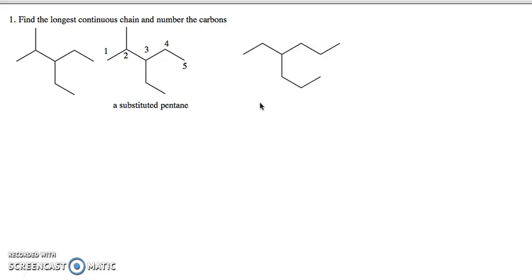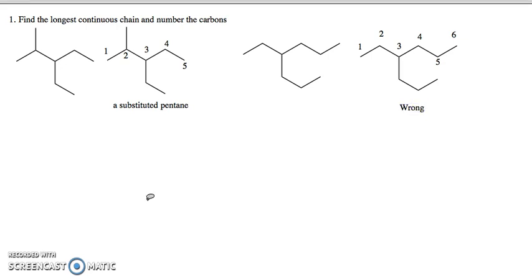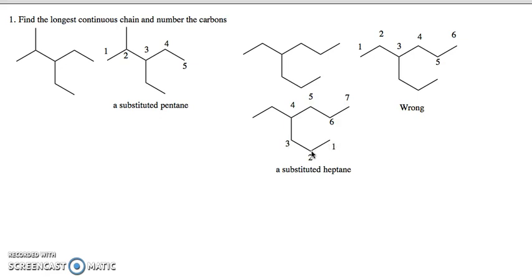Other times this determination is not as straightforward. In this compound it's tempting to start numbering here and say one, two, three, four, five, six is the longest chain — however, that would be wrong. There's another way to number this that gives us a longer continuous chain. Starting from here and going one, two, three, four, five, six, seven gives us a substituted heptane, not a substituted hexane.